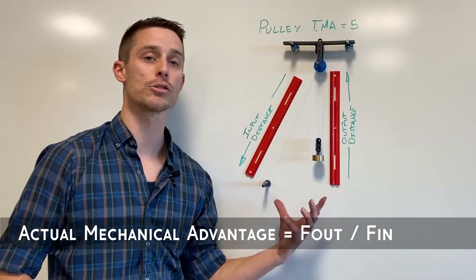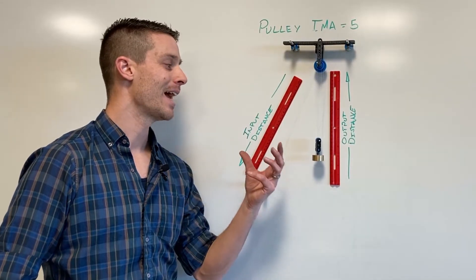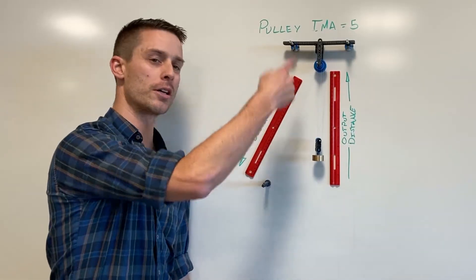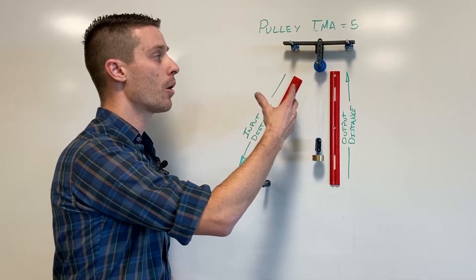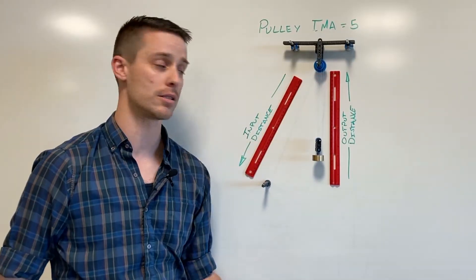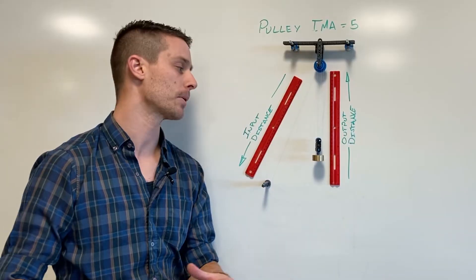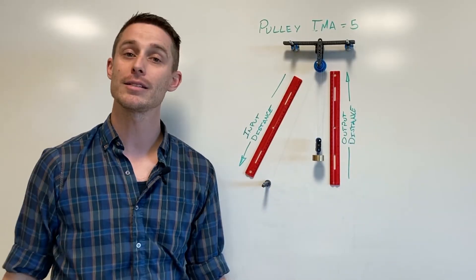Now in a perfect world the actual mechanical advantage and the ideal mechanical advantage are the same but there's friction in here and so ultimately what happens is some energy or some of my work is lost on this pulley and so the actual mechanical advantage is typically going to wind up less than the ideal mechanical advantage.